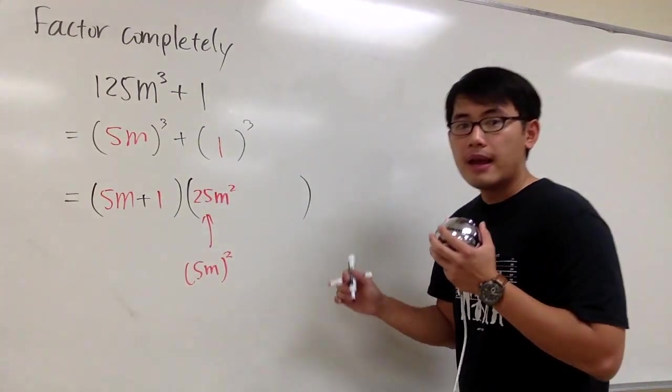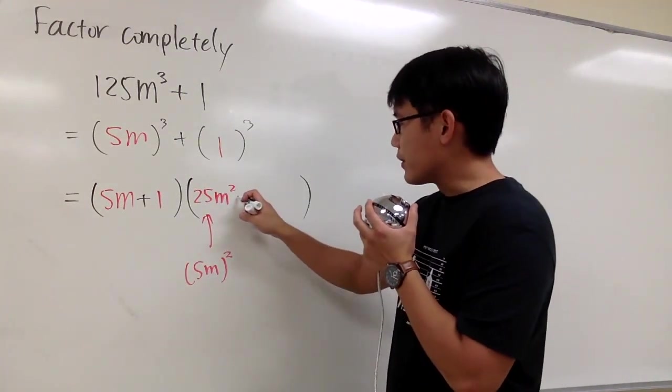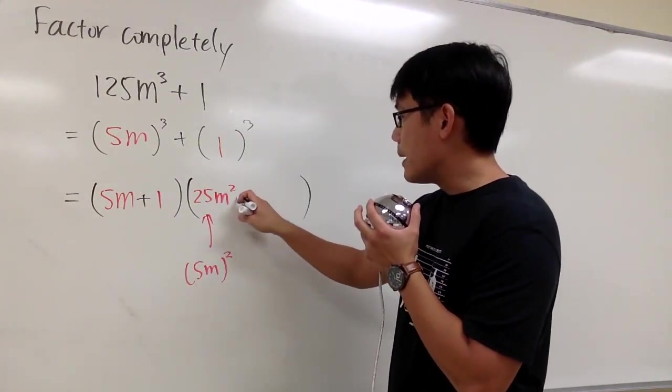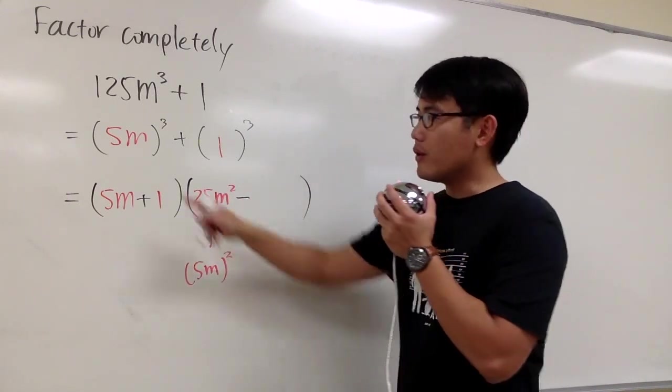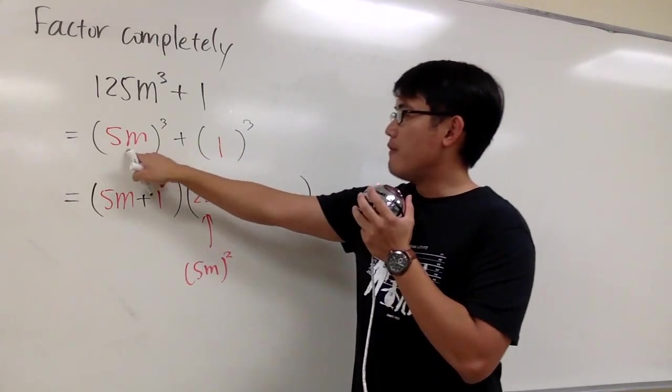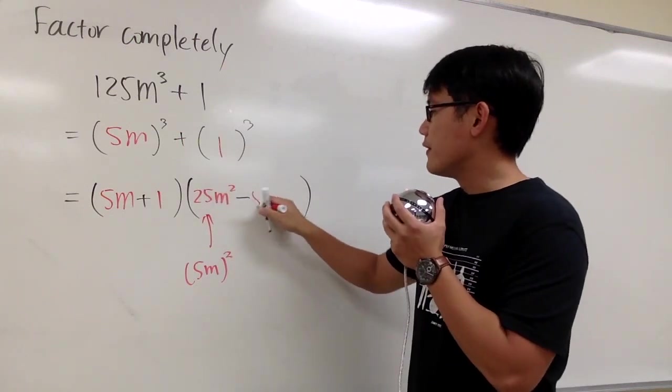The sign for the next one is going to be minus, minus the product of a and b. So 5m times 1 is just 5m.